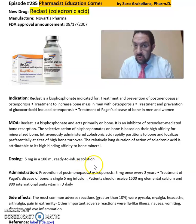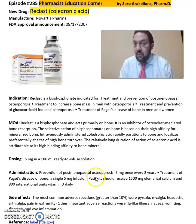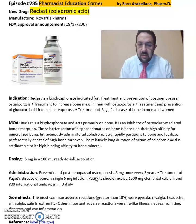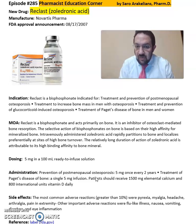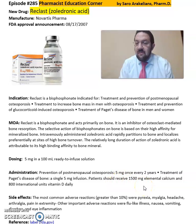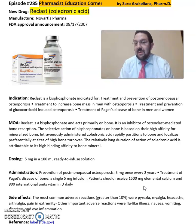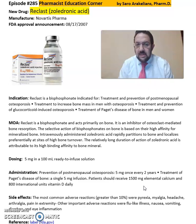It comes in a 5 milligram in 100 ml ready-to-infuse solution. For prevention of postmenopausal osteoporosis, the dose is 5 milligrams once every two years. Treatment of Paget's disease of the bone is a single 5 milligram infusion. Patients should receive 1500 mg elemental calcium and about 800 units of vitamin D daily with this medication.